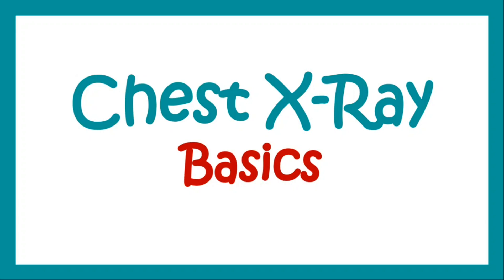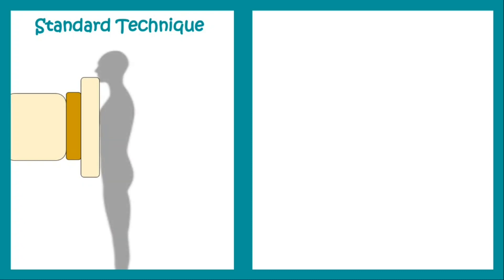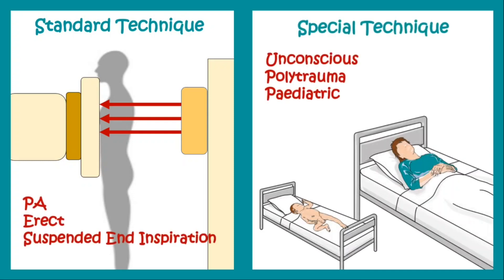In this video let us understand how we read a chest x-ray. First of all let us understand the standard technique of clicking a chest x-ray. There is a receiver in front of which a patient is made to stand, and from the back of the patient we fire x-ray beams. As the x-ray beams traverse from the posterior end of the patient towards the anterior end, this is known as a posterior-anterior view in erect position in suspended end inspiration.